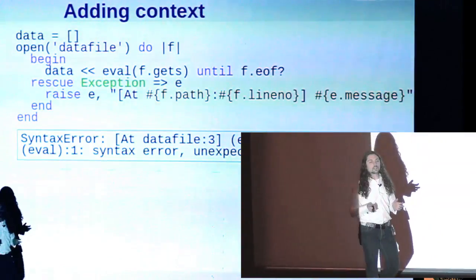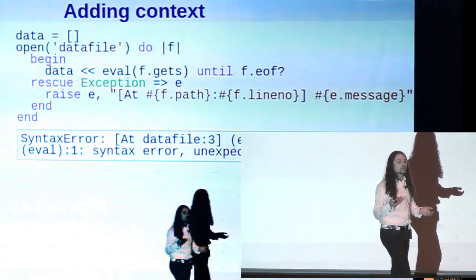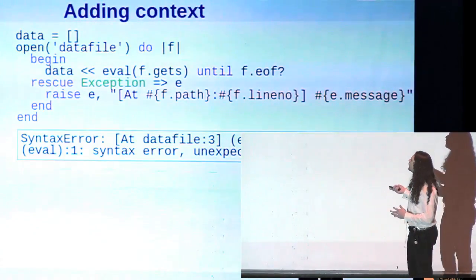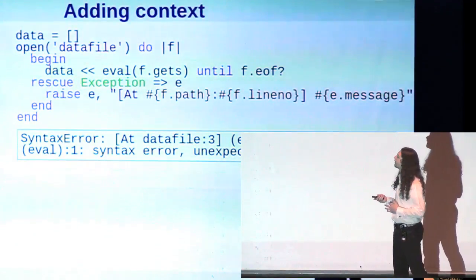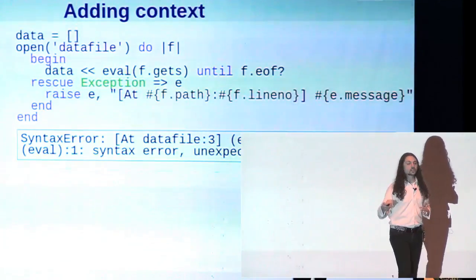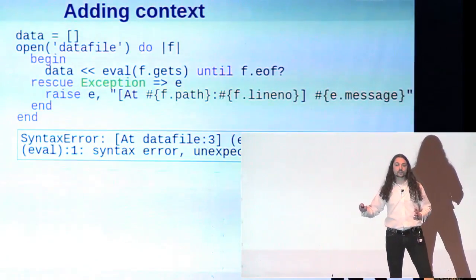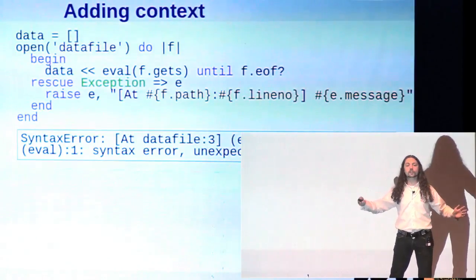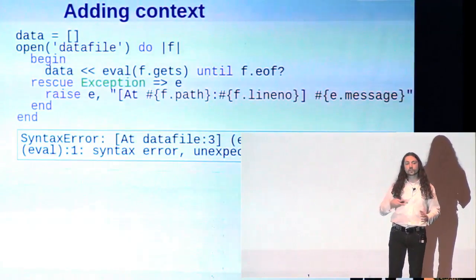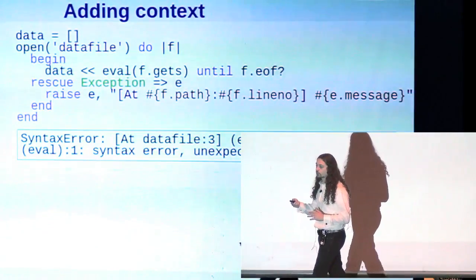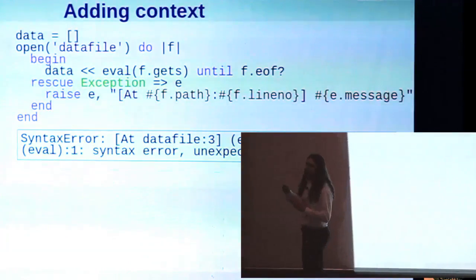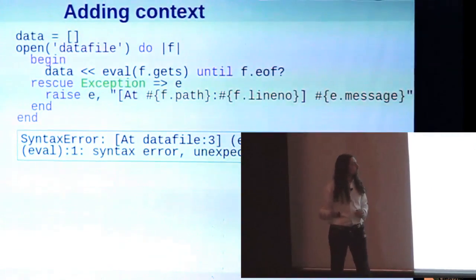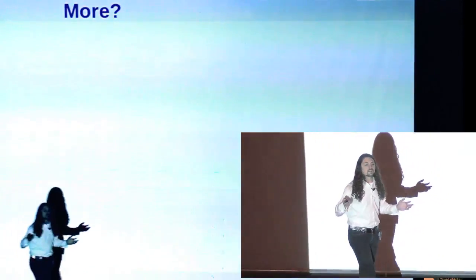So what if we put a begin rescue end around that and we rescue the exception and then we re-raise the same exception except all we do is we modify the message to insert a little bit of context about where it was raised. We're saying raise the exception with this new message, which includes the old message. Now when they get that error, they can see this contextual information at the start of the message. But all the other state on that exception is preserved. So if there's any special attributes on that exception, they're all preserved. The backtrace is all preserved. The only thing that has changed is the message. This is a great way to add some extra contextual information that maybe wasn't available at the point where the exception was originally raised.